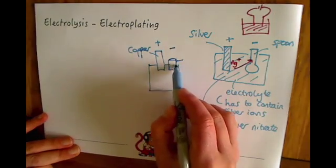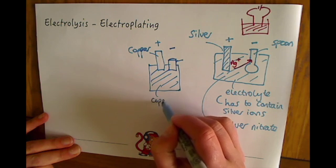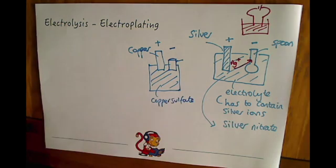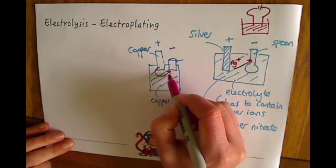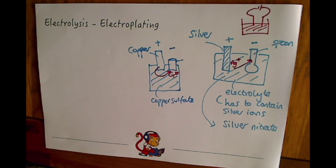And we then need to choose an electrolyte containing copper so it could be something like copper sulfate and that would then mean that the copper ions would move from the positive electrode to the negative electrode and coat the pan in copper.